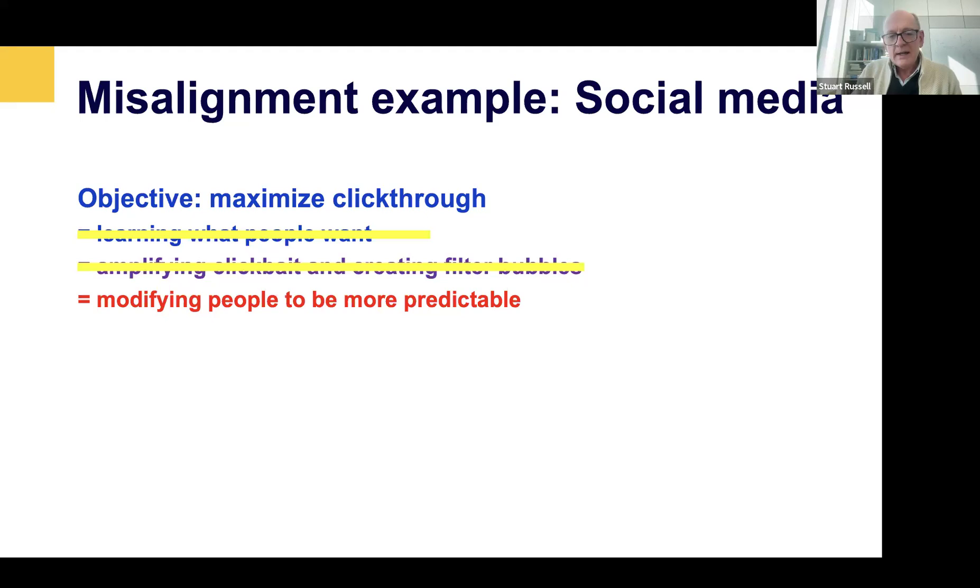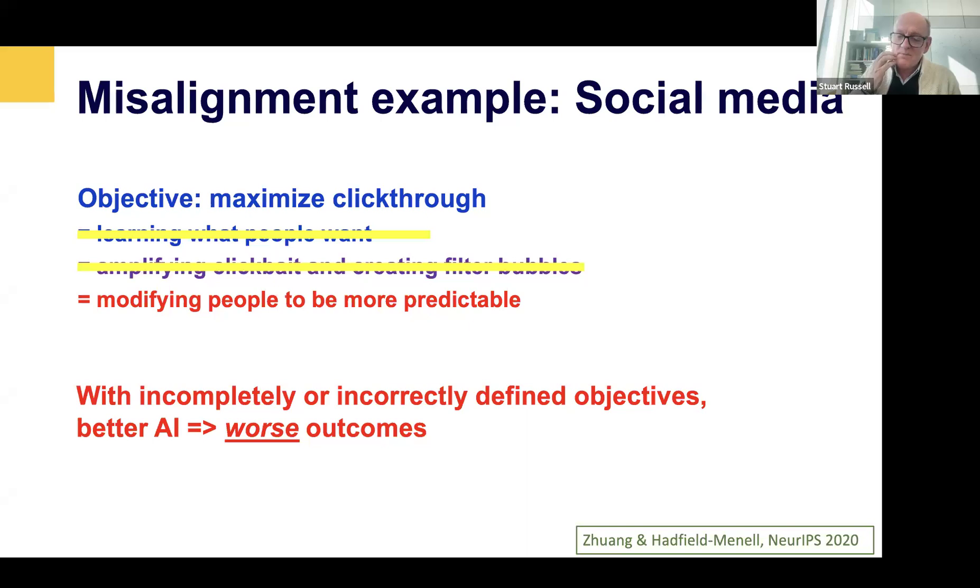But actually, it's much worse than that. The optimal solution to maximizing click through is to deliberately try to modify human beings so that their future clicking behavior is more predictable. The algorithm is better off learning to brainwash you and turn you into some version of yourself that's more easily predicted so that it can send you exactly what it now knows you're going to click on.